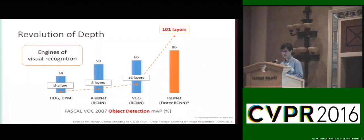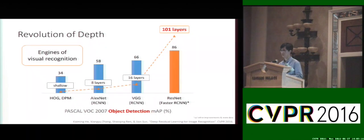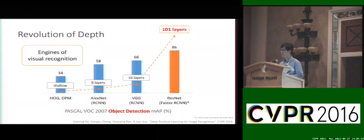Deep neural networks are also the engine of many visual recognition tasks. On the Pascal VOC object detection dataset, before deep neural networks the most successful methods such as DPM on top of HOG features had results of about 34% mAP. With the introduction of AlexNet and the RCNN method the mAP improved by about 20%, and last year with deep residual networks we witnessed another roughly 30% increase.